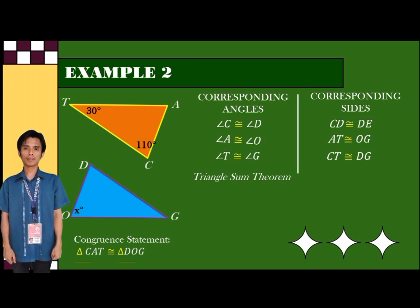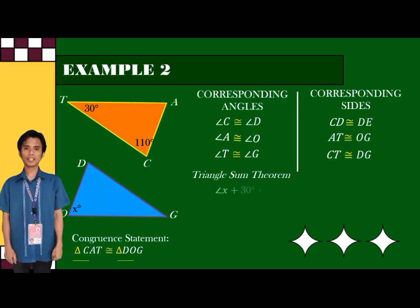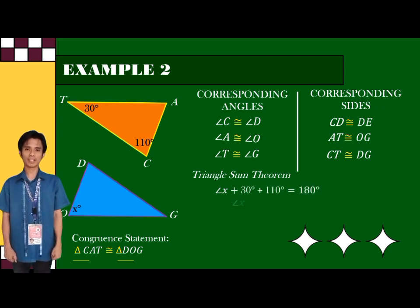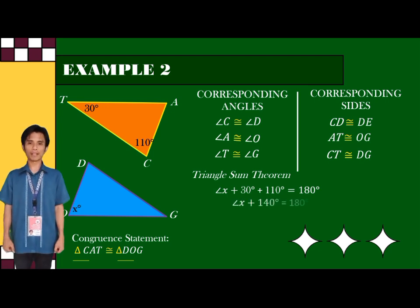Angle X plus 30 plus 110 is equal to 180 degrees. From that statement, we will get angle X plus 140 degrees is equal to 180 degrees.